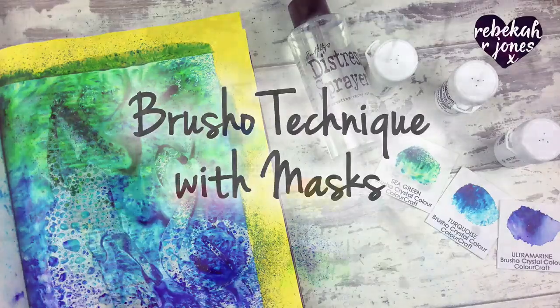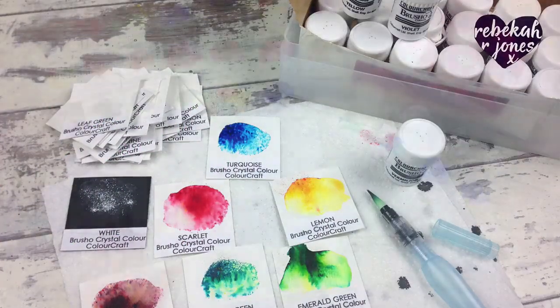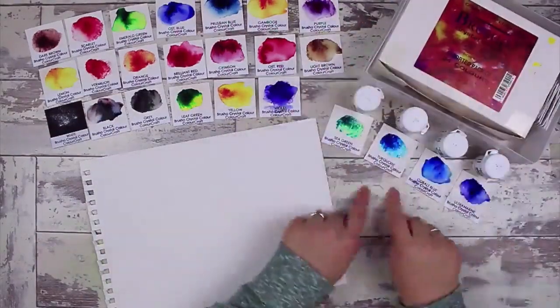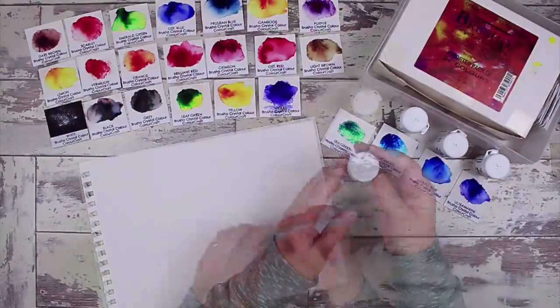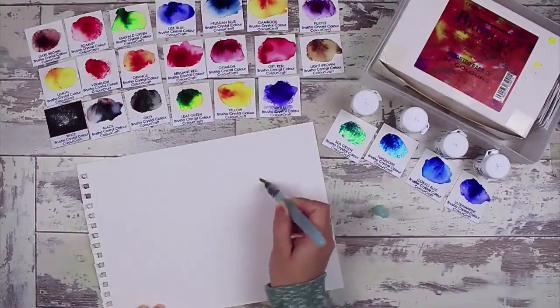This is super messy and a lot of fun, but firstly I want to show you what Brush-o is. It's a watercolor crystal essentially. It comes in a powder pigment type form, and you definitely do not want to open the caps of your little bottles when you get them.